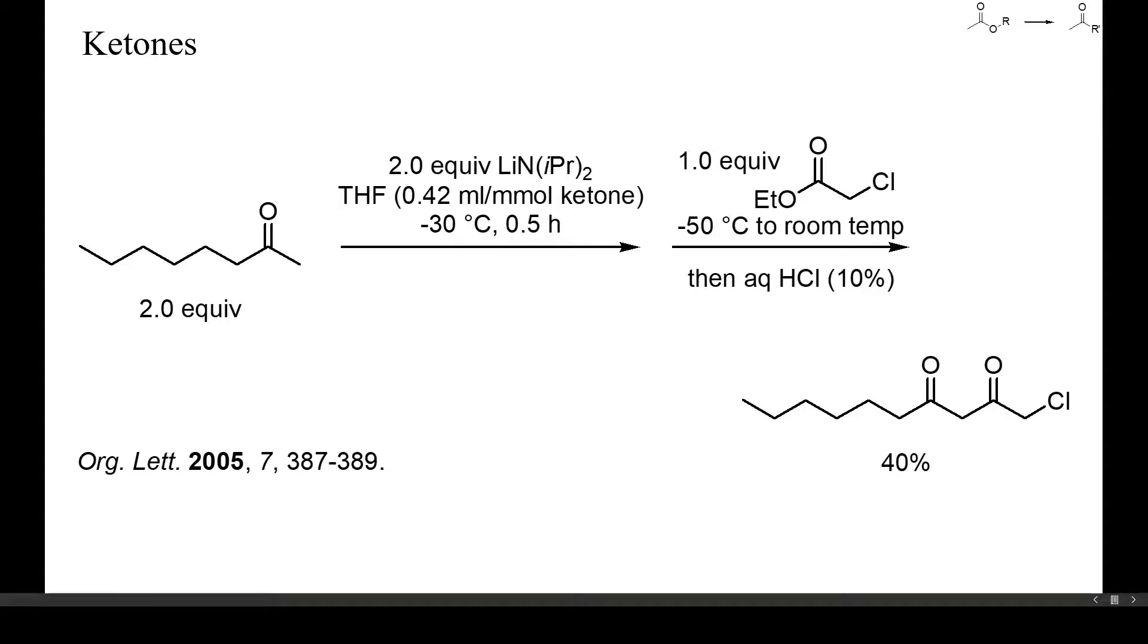With unsymmetrical ketones, the number of potential byproducts increases even further. In this example, 2-octanone was lithiated with LDA and then condensed with one equivalent of ethyl chloroacetate, which may also act as alkylating reagent. Still, despite the many potential side reactions, a substantial yield of diketone resulted.